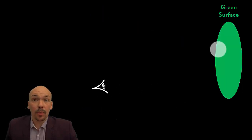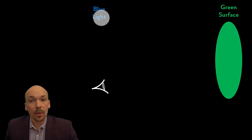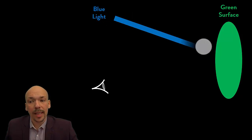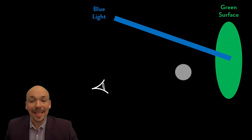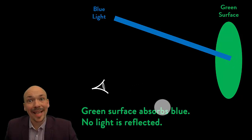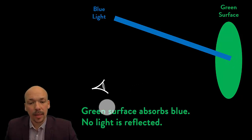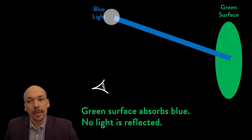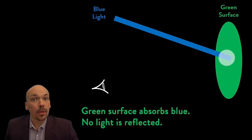Now something strange: we have a green surface and we have blue light — so instead of all the colors in white light, we have only blue light. If blue light hits a green surface, you can see that nothing is reflected, because a green surface absorbs blue light and all other colors except green. No light is reflected because it doesn't get green light from the light source.